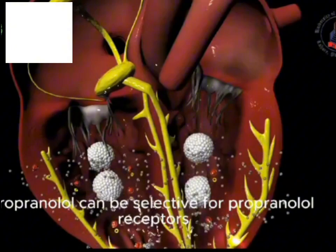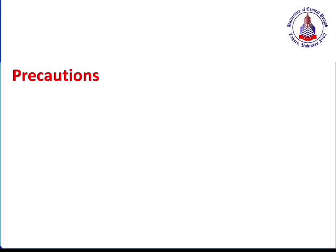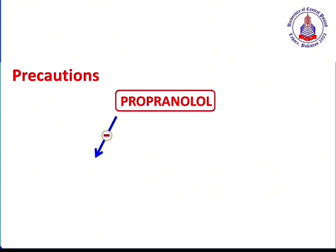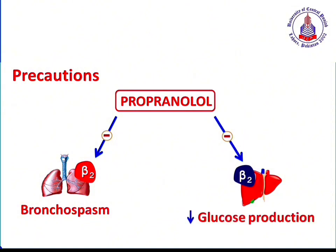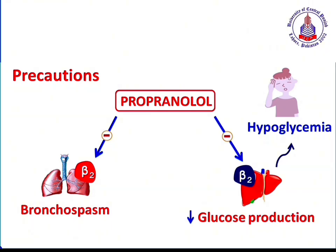Propranolol can be selective for beta-1 receptors or non-selective, working on both beta-1 and beta-2 receptors. One important precaution is that because of its non-selectivity, this drug can block beta-2 receptors located on the lungs, producing bronchospasm. That's why propranolol should be carefully used in asthmatic patients — it is contraindicated due to bronchospasm. Similarly, this drug can block beta-2 receptors on the liver, resulting in decreased hepatic glucose production, which may worsen hypoglycemia — particularly important in diabetic patients taking antidiabetic agents.